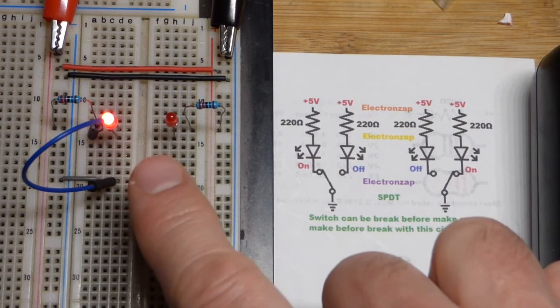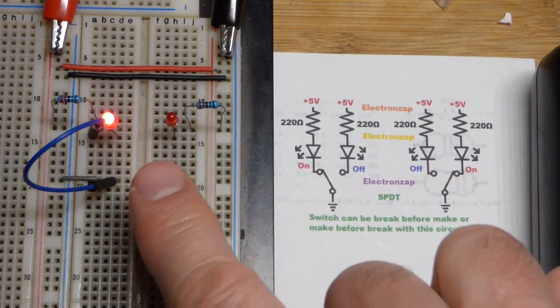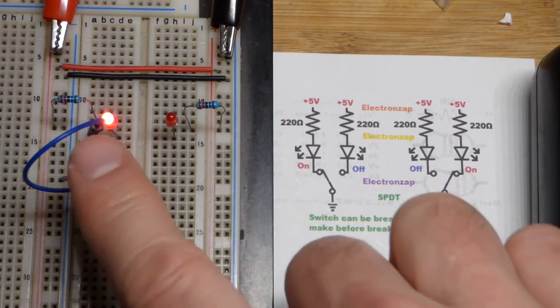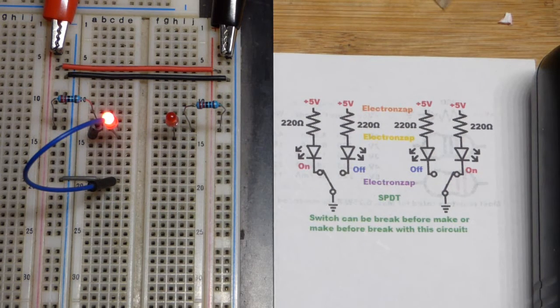Again, some of them if they're make before break they can connect them both at the same time, which could be a problem if you cannot deliver or receive power from both sides at the same time.